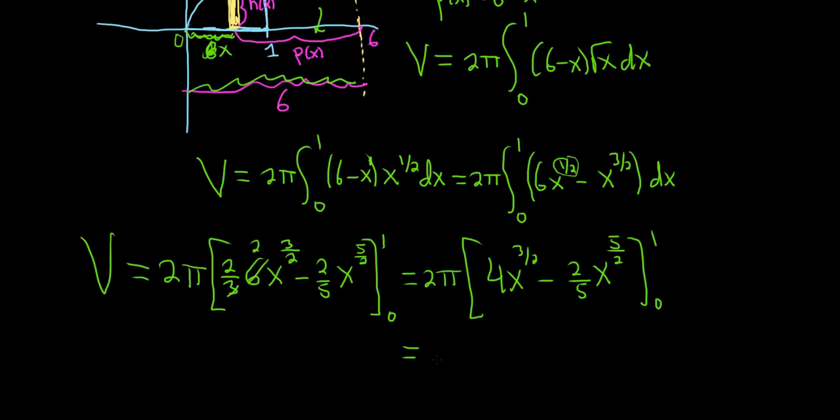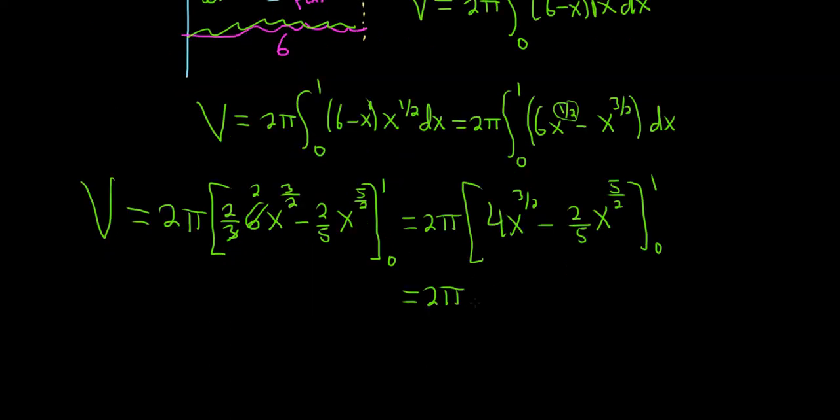All right, so we have 2 pi. First, we plug in the 1. So that'll give us bracket. Oh, well, 1 to any power is 1. So this is just 4 minus 2 fifths. Right, because 1 to the 3 halves is 1, and 1 to the 5 halves is also 1. Then minus, and then when you plug in 0, everything goes away because they're all 0s.